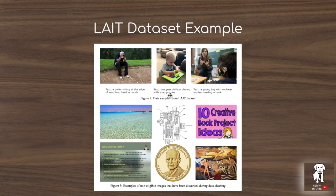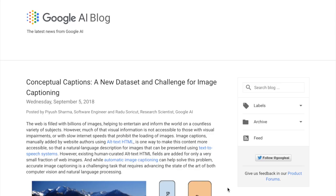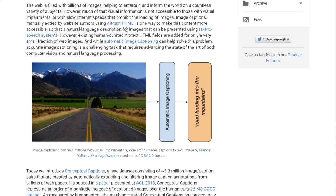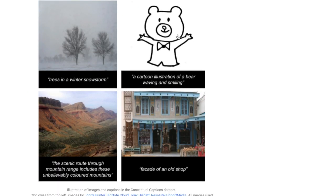Examples from the filtering process show cleaned image-text pairs, such as an image paired with 'one year old boy playing with snap puzzles' — where the words are tokenized as the text sequence and regions of interest from the image form the visual sequence for ImageBERT. Another popular dataset used in this paper is Conceptual Captions, constructed by scraping alt text from image tags in HTML on web pages. Examples include captions like 'a cartoon illustration of a bear waving and smiling.'